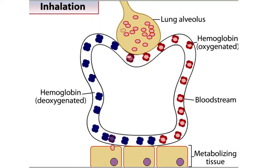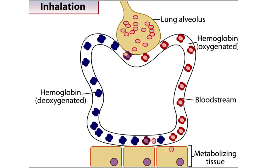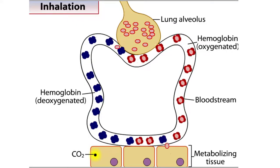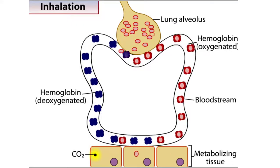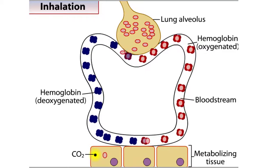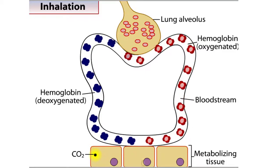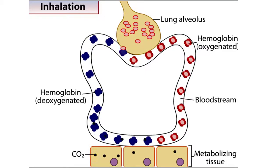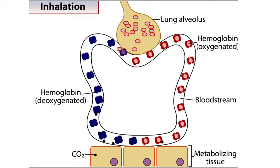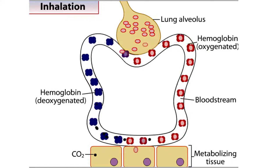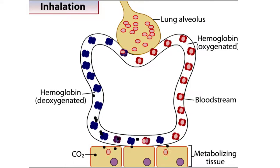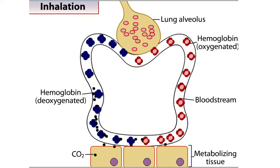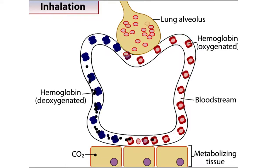As cells consume oxygen, they generate carbon dioxide as a waste product during the citric acid cycle of cellular respiration. The carbon dioxide diffuses into the bloodstream, where it dissolves in the plasma and travels to the lungs.